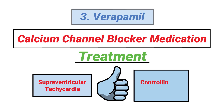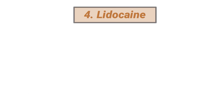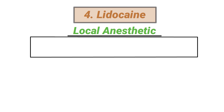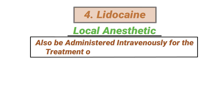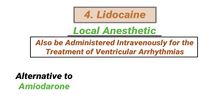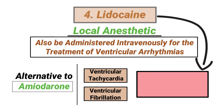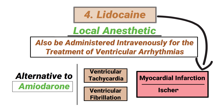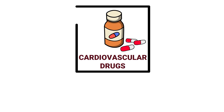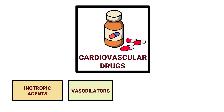Verapamil is effective in controlling the ventricular rate. Lidocaine is often known for being a local anesthetic; however, it can also be administered intravenously for the treatment of ventricular arrhythmias. In such a case, it can be given as an alternative to amiodarone for the management of ventricular tachycardia or ventricular fibrillation. Lidocaine may also be used in patients with a myocardial infarction or ischemia as well.